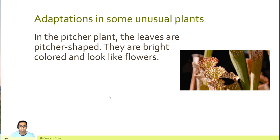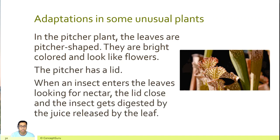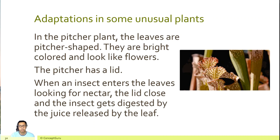In the pitcher plant, the leaves are pitcher-shaped. They are bright colored and look like flowers. The pitcher has a lid. When an insect enters the leaves looking for nectar, the lid closes and the insect gets digested by the juice released by the leaf.